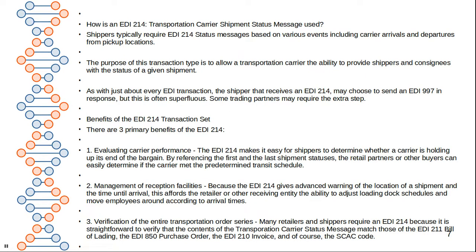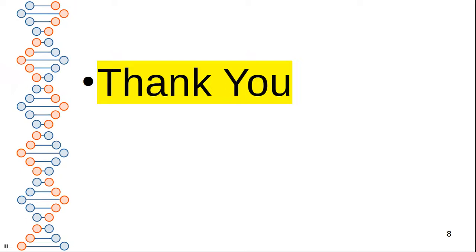Third, verification of the entire transportation order series: many retailers and shippers require an EDI 214 because it is straightforward to verify that the contents of the transportation carrier status message match those of related documents such as the EDI 211 bill of lading, the EDI 850 purchase order, the EDI 210 invoice, and the relevant CSC codes. Thank you friends — if you liked this video, please like, share, and subscribe to the channel.